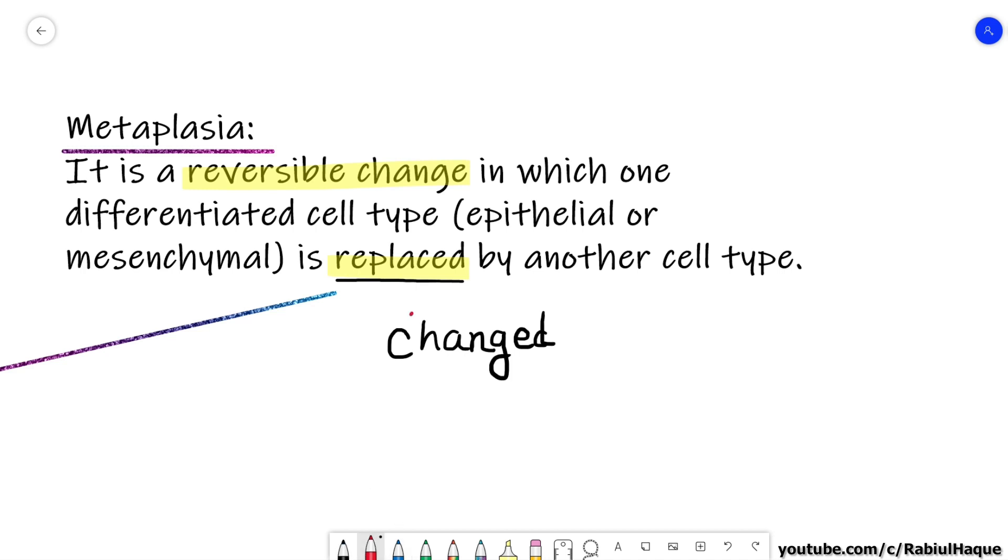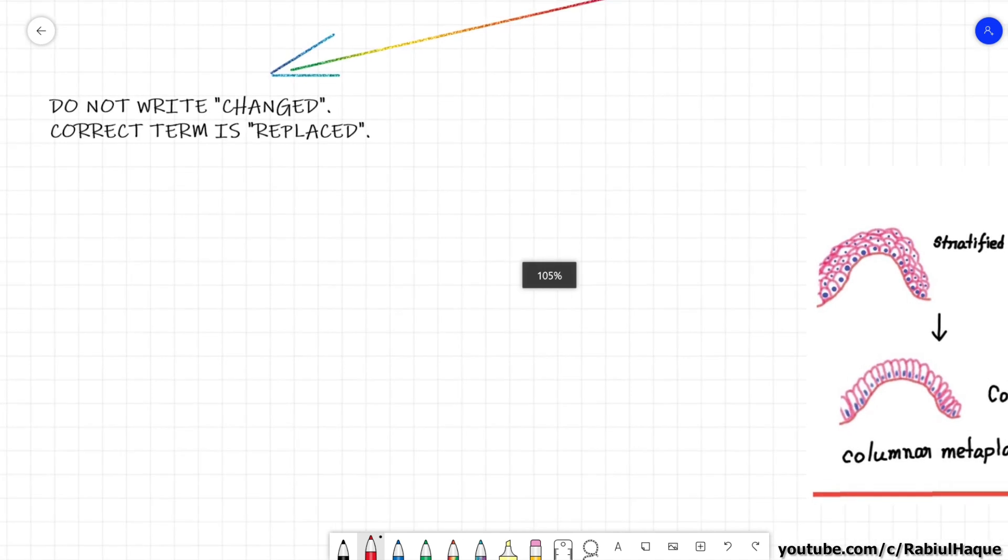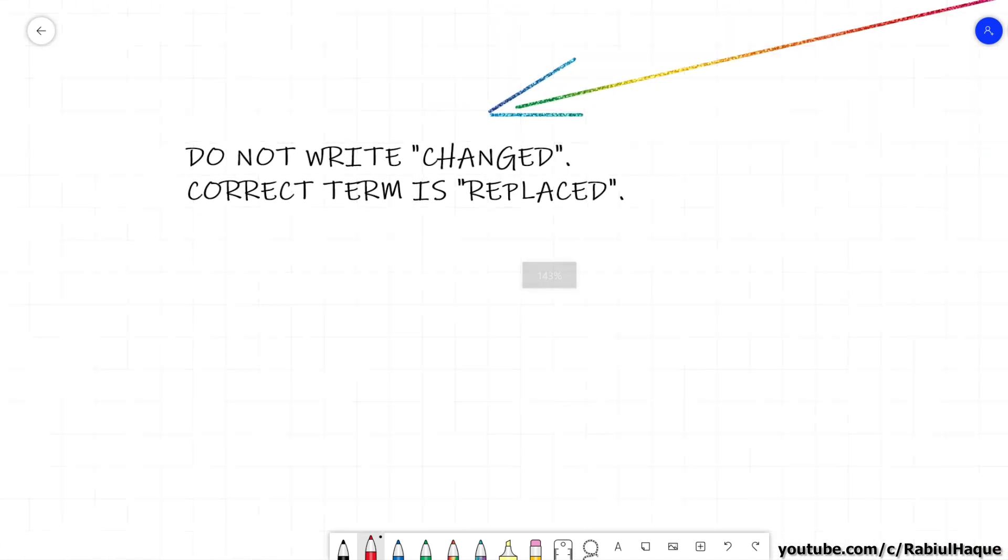For example, suppose there was a cell that was flat squamous epithelium and now that type of cell has changed into columnar type of cell. But the actual term should be 'replaced.' The cells that were squamous cells, they actually died due to stress, and when the new cells were generated from stem cells they appeared as columnar cell because there was either reprogramming of the stem cells or there was some migration to cope with the stress.